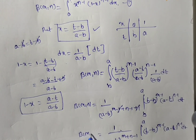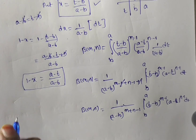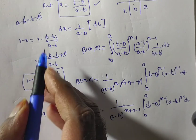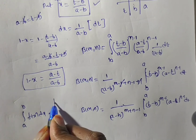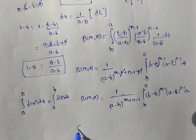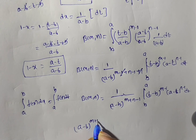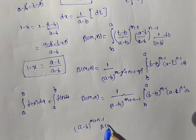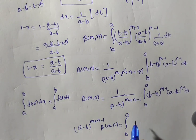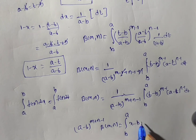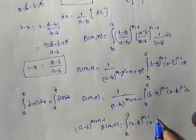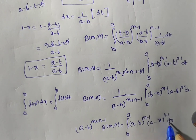We know from the property of definite integrals that integral from a to b of f(x) dx equals integral from a to b of f(t) dt. So replacing t with x and dt with dx, and cross-multiplying, we get: (a minus b) to the power m plus n minus 1 times beta of m comma n equals integral from b to a of (x minus b) to the power m minus 1 times (a minus x) to the power n minus 1 dx. This completes the proof.